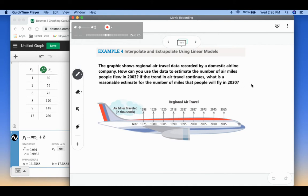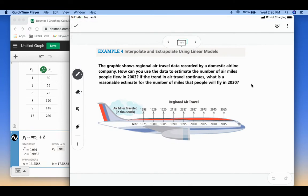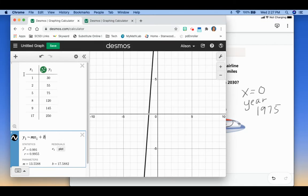So first of all, you'll notice that the years start in 1975. And then they go up by five years. So I'm going to say x equals zero is the year 1975. So this is going to be zero, five, ten, and so on. Okay, that's going to make it easier for me to put this in.